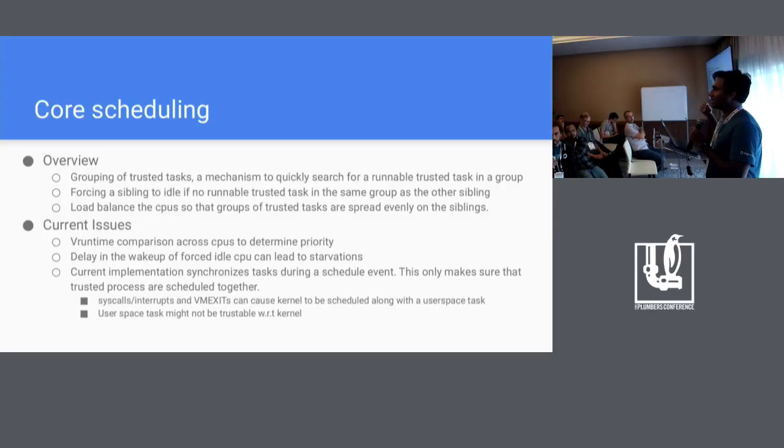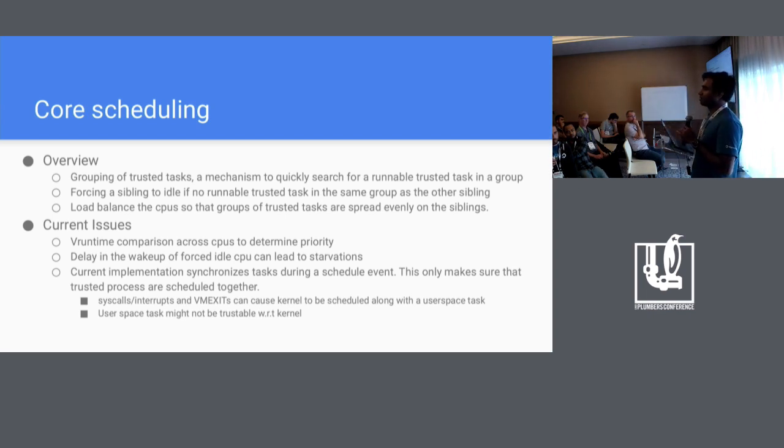What I'm really curious about is we've been having core scheduling discussions for two years now, and as far as I know nothing is upstream. We have millions of systems running some kind of homegrown core scheduling system, but all of that is downstream code, which is a terrible situation. The whole point of this microconf was to come up with ideas about how to actually mainline it. What is keeping us from pushing it to mainline is the difference in ideology.